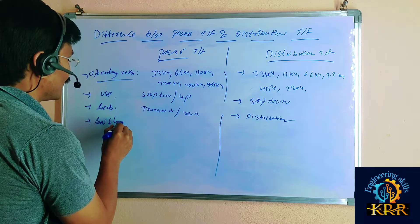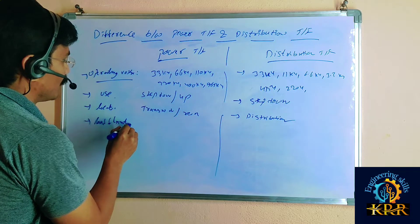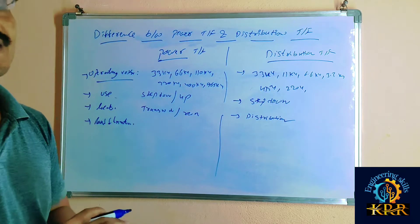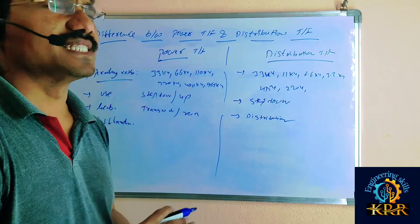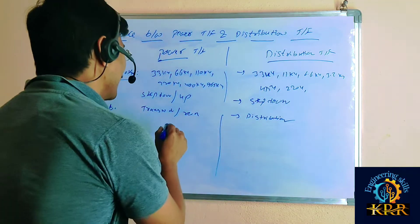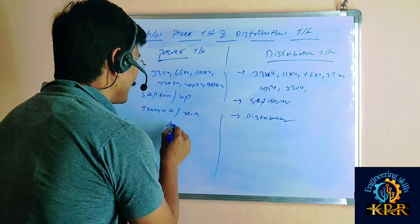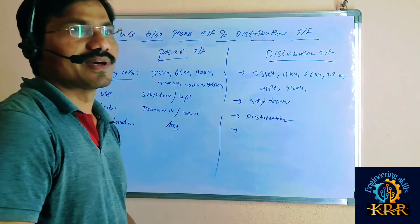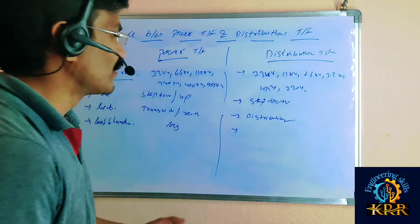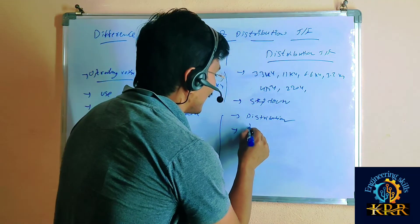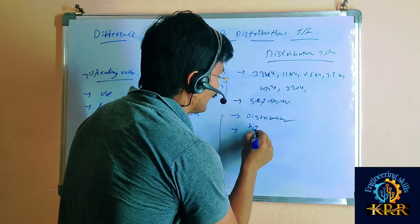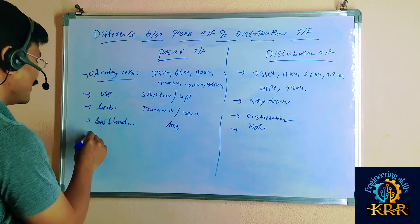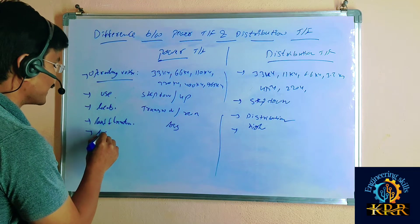If you go for load fluctuation, the power transformer load fluctuation is less. In the distribution transformer, the load fluctuation is high.